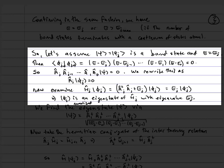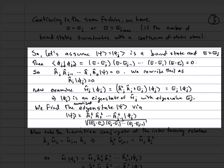We construct the normalized eigenstate ψⱼ by applying a₁† a₂† ⋯ aⱼ₋₁† to |φⱼ⟩, divided by the square root of (eⱼ − e₀)(eⱼ − e₁) ⋯ (eⱼ − eⱼ₋₁), so that the state is normalized.